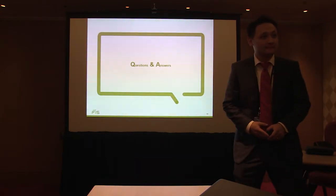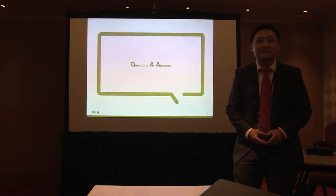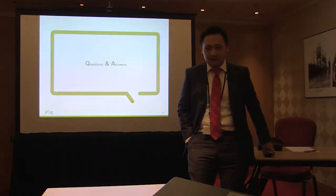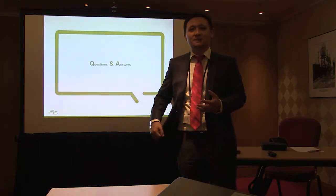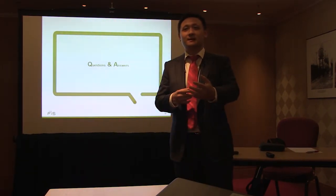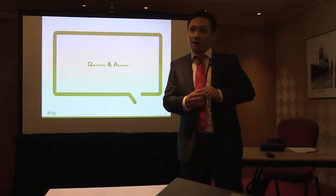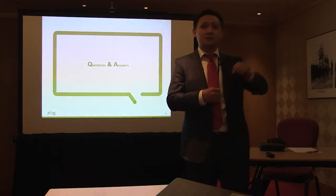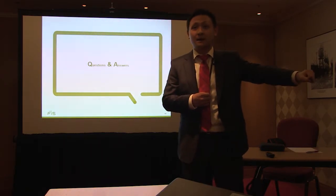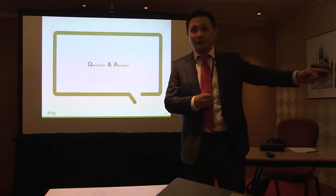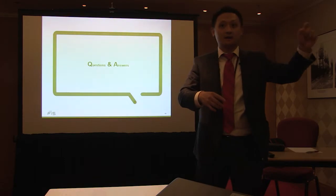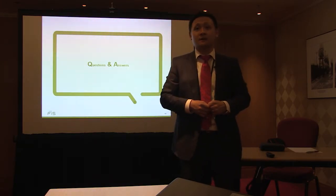Q: If I post initial margin to you and you post to me, don't they cancel out? A: Typically no. If I post initial margin it goes to a third-party custodian bank, and you post yours to a custodian bank too. If you default, the custodian bank gives me your initial margin — and vice versa. So the numbers don't simply net out; they're held separately for protection.